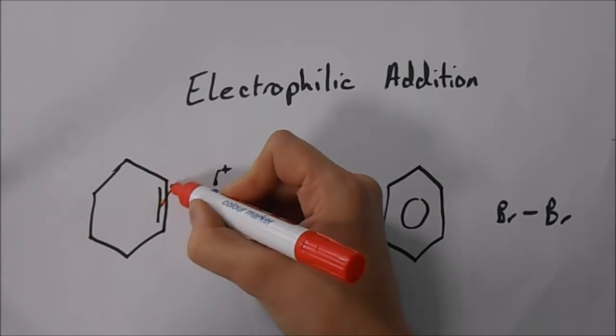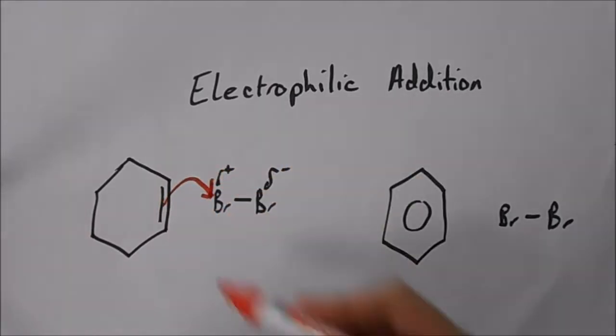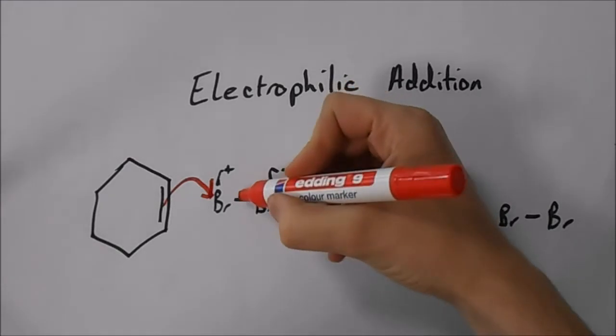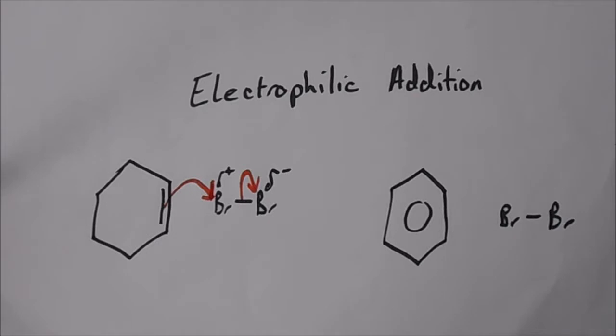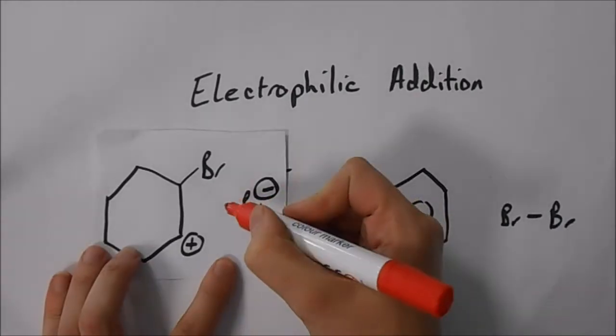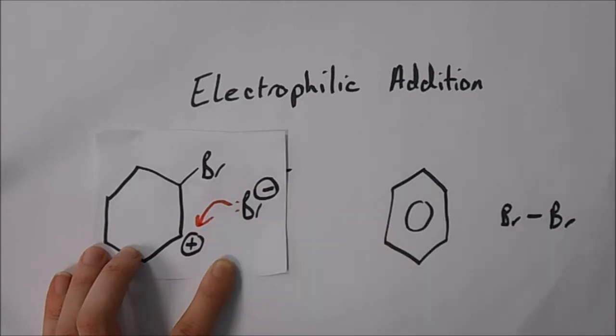That means the electrons in the double bond can attack the electrophile here, the Br2, and that means this bond here breaks as well, which means we end up with an intermediate and the intermediate then reacts to form the product.